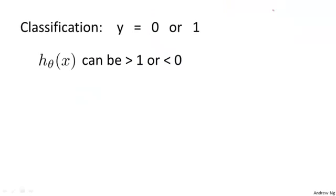Here's one other funny thing about what would happen if we were to use linear regression for a classification problem. For classification, we know that y is either 0 or 1, but if you are using linear regression, the hypothesis can output values that are much larger than 1 or less than 0, even if all of your training examples have labels y equals 0 or 1. And it seems kind of strange if the algorithm can output values much larger than 1 or much smaller than 0.